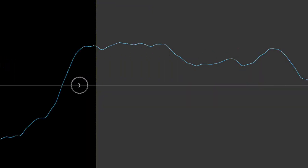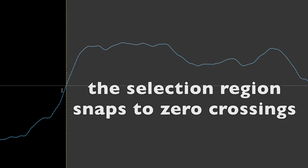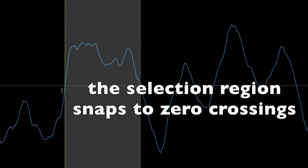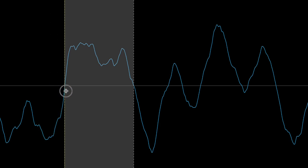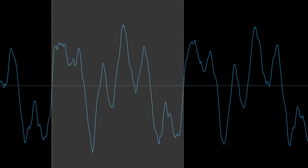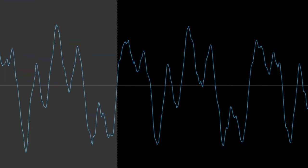I'm going to count the number of audio samples between each time the wave repeats. iZotope RX helps me by automatically snapping the selection region to the zero crossings so that I can get an exact selection without needing to zoom in all the way down to the sample level. I've selected one complete wave, and we can see the length of the selection is displayed down here.